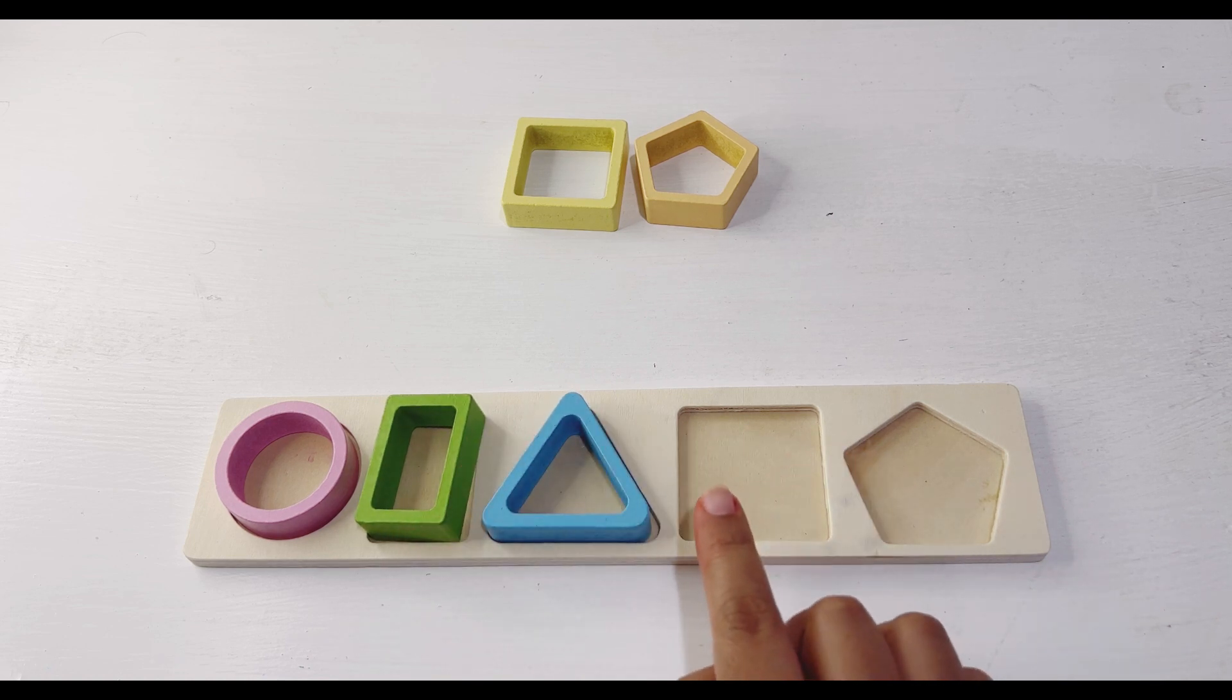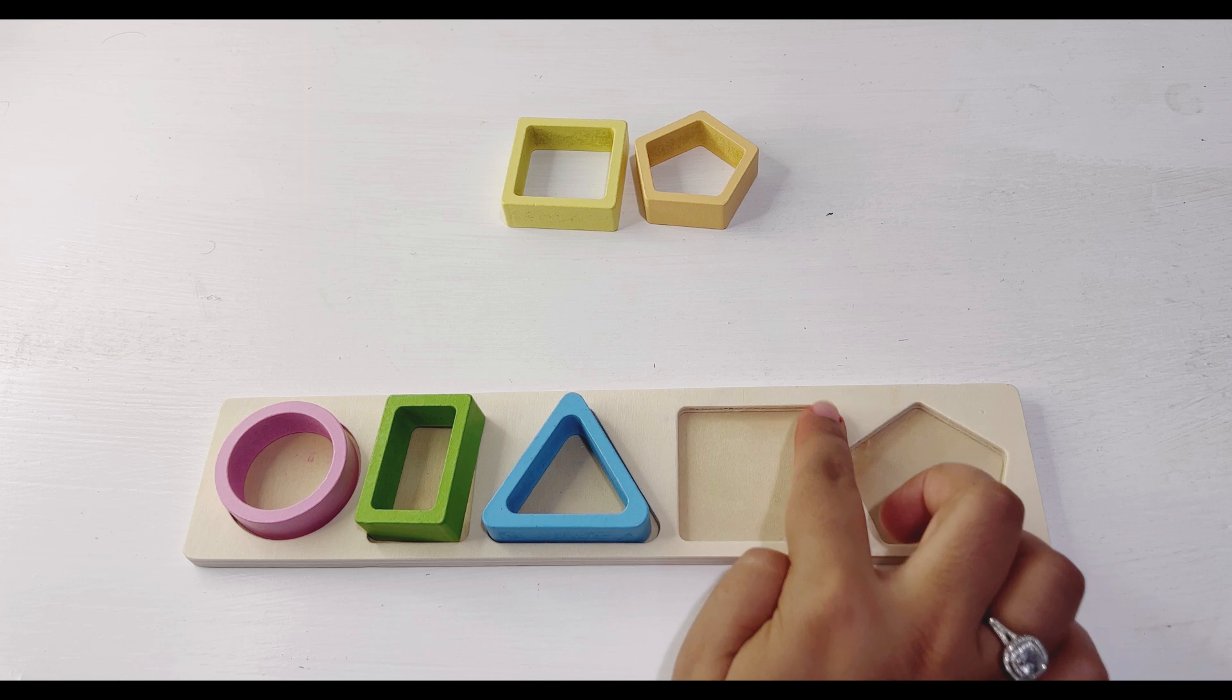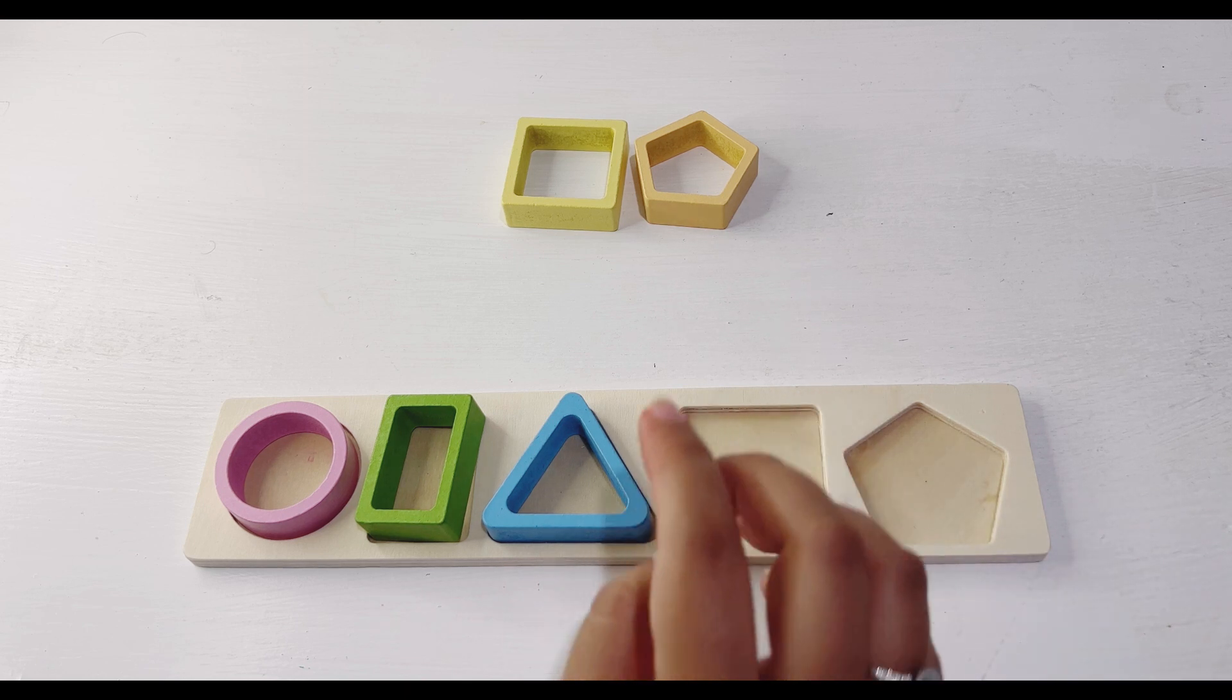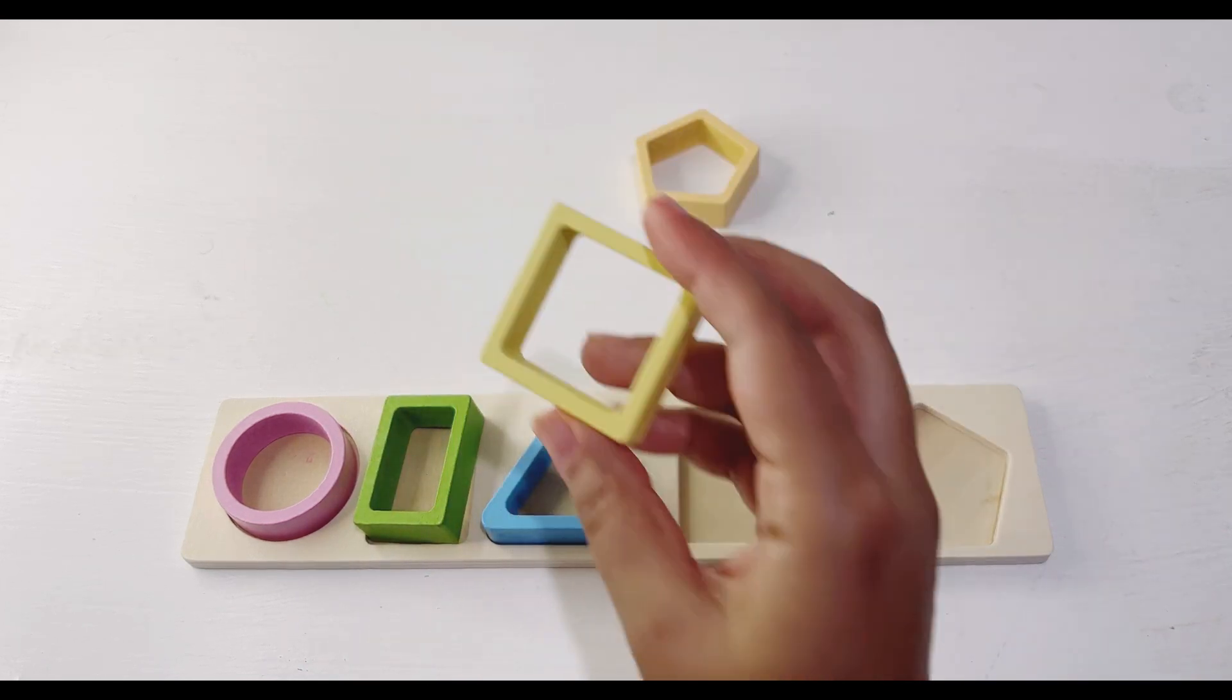Our next shape is square. It has four equal sides and four corners. Let's find it. Here you go, it's yellow square with four equal sides and corners.